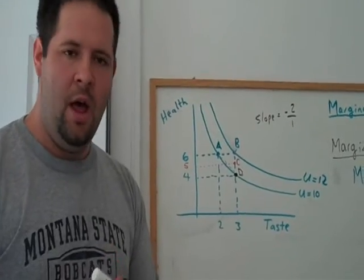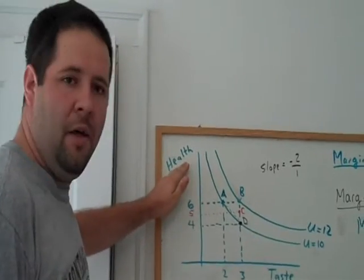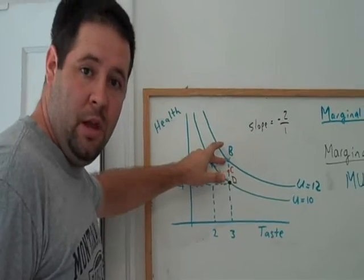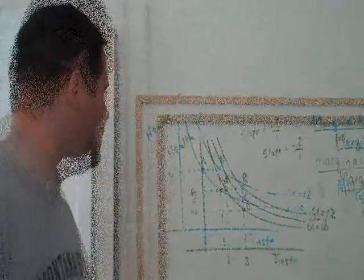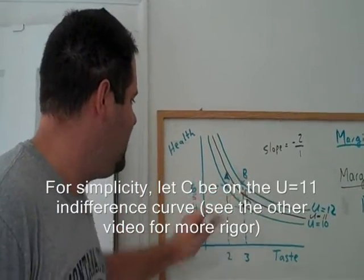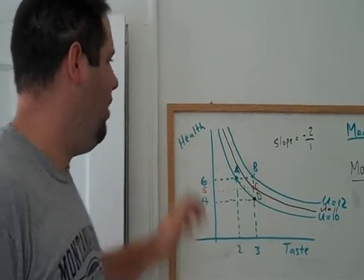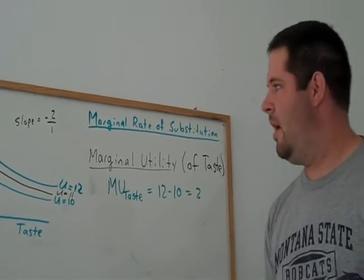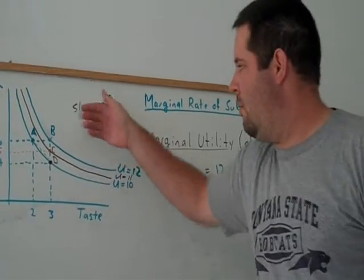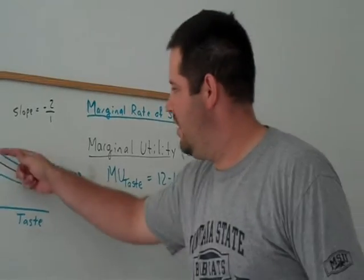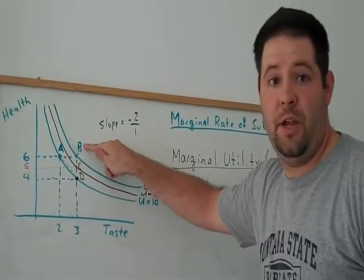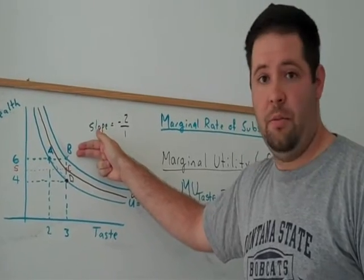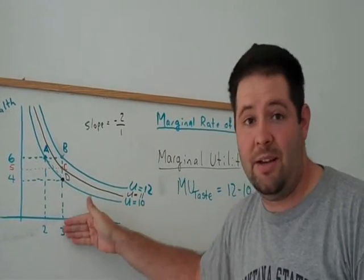We can do an example of the marginal utility of health. And in this case, let's do the example starting from bundle B and going down to bundle C. So, what is the marginal utility at C of health? Again, thinking about marginal utility, if I give this consumer one more unit of health at bundle C, the only difference between bundle C and bundle B is that there's one more unit of health in bundle B than there is in bundle C. They have the same amount of taste.